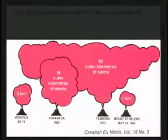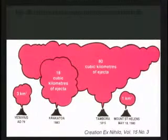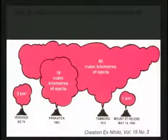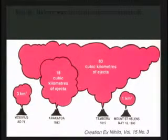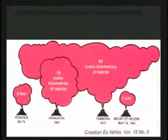Mount St. Helens ejected one cubic kilometer of material. Mount Tambora did 80 cubic kilometers. Mount Krakatoa — probably one of the loudest noises ever on the planet — is in Indonesia near Vietnam. When it erupted in 1883, it blew the entire mountain away — not just a hole, the whole mountain is gone. It made a tidal wave that crossed the Indian Ocean at 2,000 miles per hour.